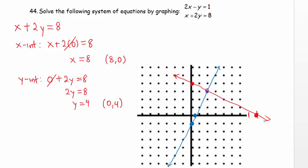It appears that this is the intersection point, 2 to the right of the origin and 3 up. 2 comma 3.